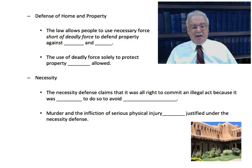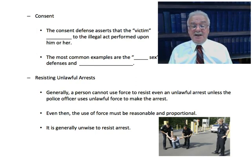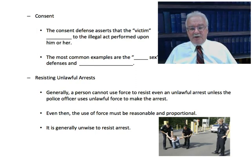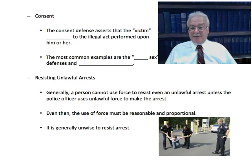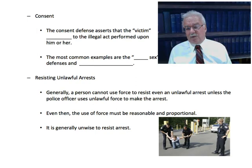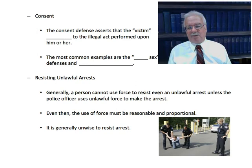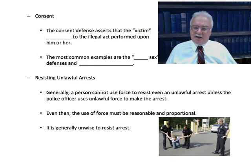Let's talk about the consent defense. The consent defense asserts that the victim consented to the illegal act performed upon him or her. Common examples are the rough sex defense, where two people agreed to engage in sadomasochistic sex and one might be injured but both voluntarily participated, and professional boxing, where two people try to inflict serious injury on each other. Because both are consenting and the event is licensed by the state, there's no crime even if one injures or kills the other. Note that unlicensed events like an informal fight club won't qualify as there are no doctors present or state oversight.